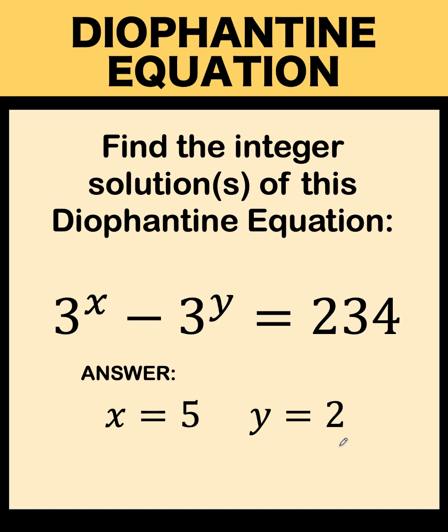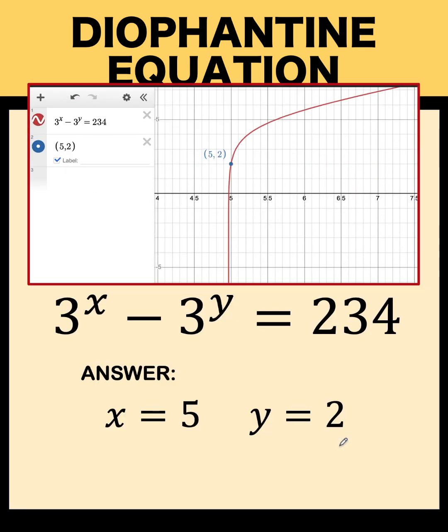To check if this answer is correct, we can visualize using Desmos graphing calculator. This red curve is the graph of 3 raised to x minus 3 raised to y equals 234. And the ordered pair 5 comma 2 is this point that is on the curve and both of them are integers.